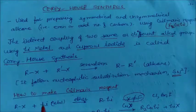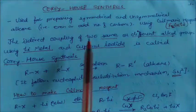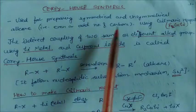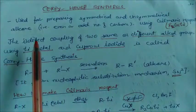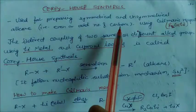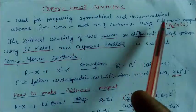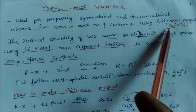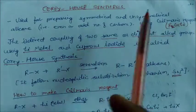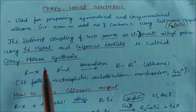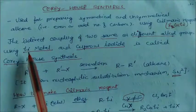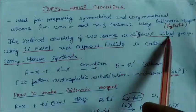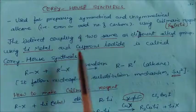Hello friends, today we will see this name reaction: Corey-House synthesis. This Corey-House synthesis is used for preparing symmetrical and unsymmetrical alkanes — those alkanes which have even or odd number of carbons — using Gilman's reagent, that is the dialkyl cuprate lithium (R₂CuLi). With this Gilman's reagent we can prepare symmetrical and unsymmetrical alkanes by coupling two same or different alkyl groups.